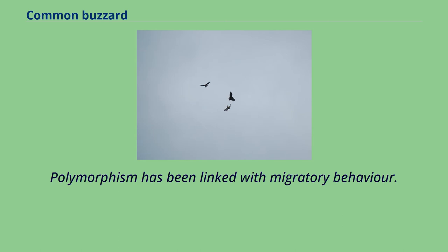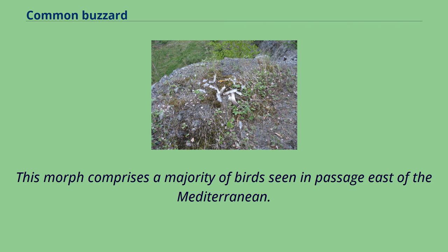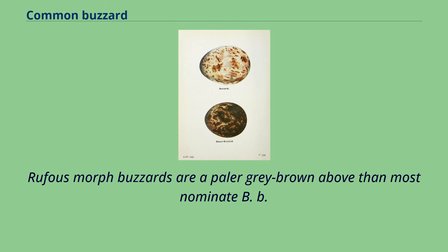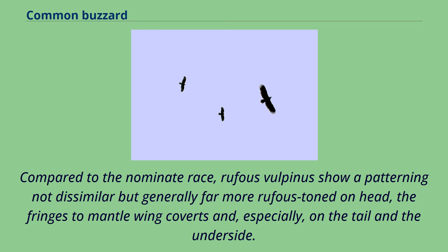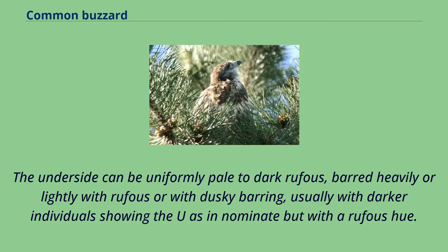The most common type of steppe buzzard is the rufous morph, which gives this subspecies its scientific name. This morph comprises a majority of birds seen in passage east of the Mediterranean. Rufous morph buzzards are a paler gray-brown above than most nominate B. b. buteo. Compared to the nominate race, rufous vulpinus show patterning that is generally far more rufous-toned on the head, the fringes to mantle and wing covers, and especially on the tail and underside. The head is gray-brown with rufous tinges, the tail is rufous and can vary from almost unmarked to thinly dark barred with a subterminal band. The underside can be uniformly pale to dark rufous, barred heavily or lightly.